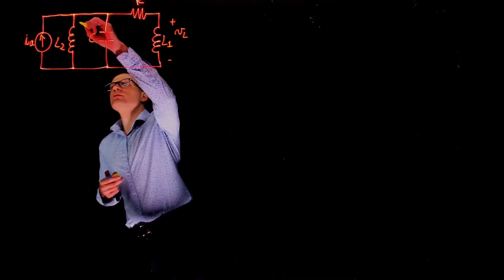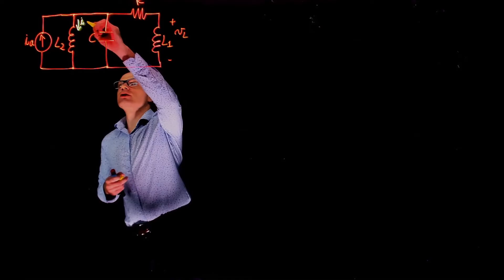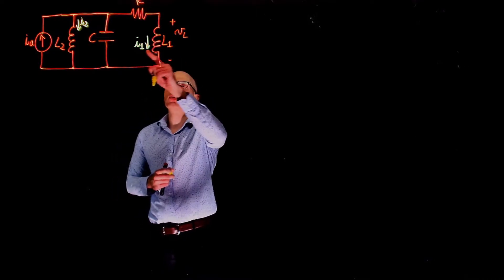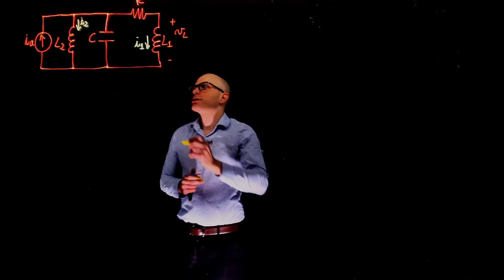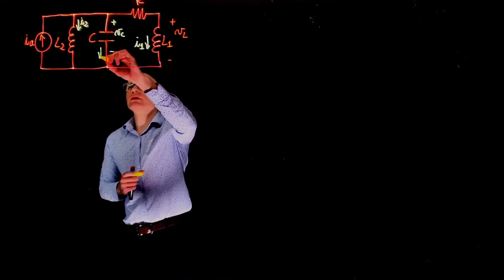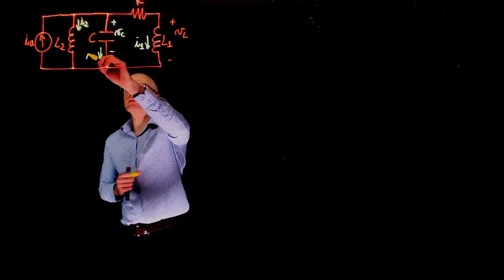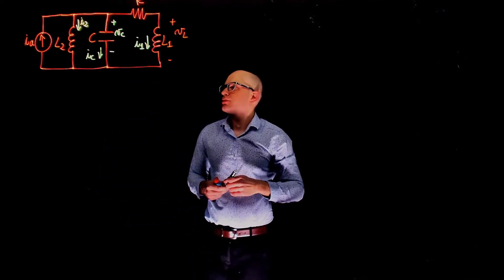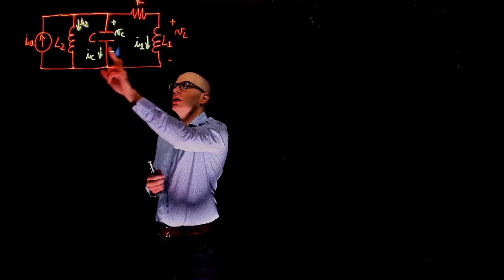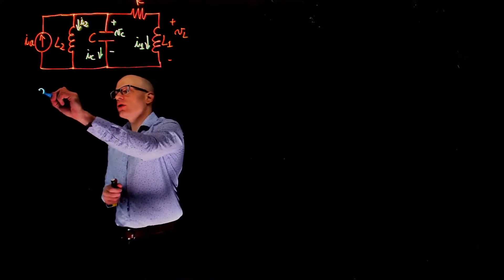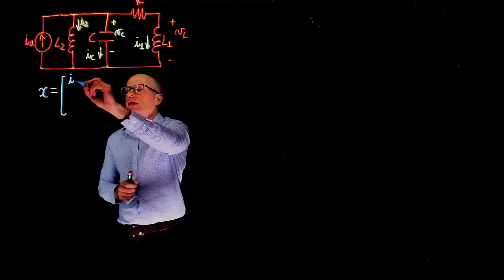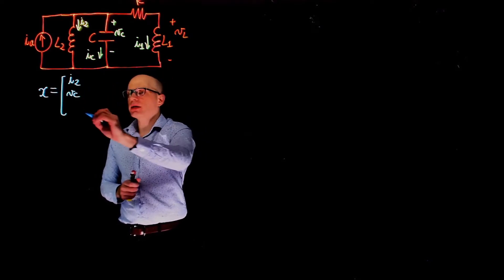So a good choice for state variables is the current through the inductors and the voltage across the capacitor. Let's define the current through the first inductor as I2, the current through the second as I1, with L1 and L2 labeling the inductors. Let's call the voltage across the capacitor Vc, and define the current through the capacitor as Ic pointing downwards. Our state vector X has elements: I2 (first), Vc (second), and I1 (third).